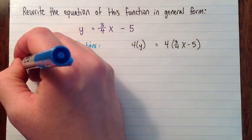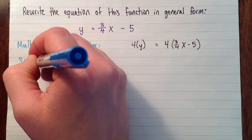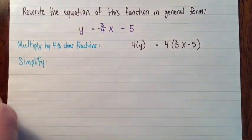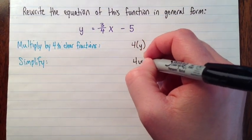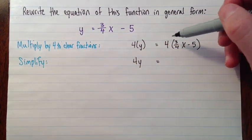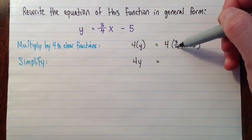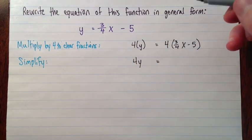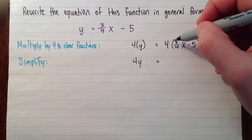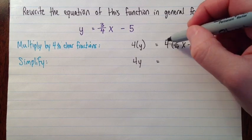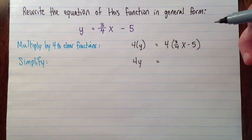Now we simplify. So here we just have 4y. Now here we have 4 times 3 fourths. So there's a few ways to look at it. One way is to say we have 4 times 3 divided by 4. So these two 4s undo each other.